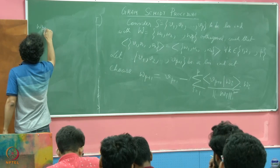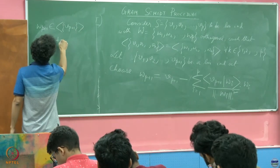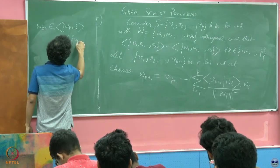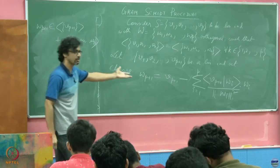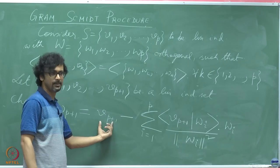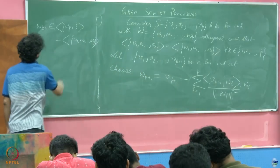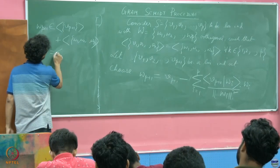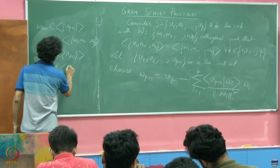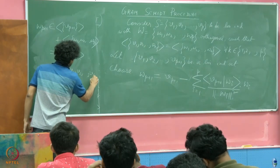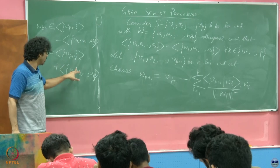So now look at this W P plus 1 again from this expression. Can I not say the W P plus 1 belongs to span of V P plus 1 plus span of W 1, W 2 till W P straightaway? There is one component along V P plus 1 and the rest of it is on the subspace span by W 1 through W P. But what is this? This is equal to the span of V P plus 1 plus by induction hypothesis, this is nothing but the span of V 1, V 2 till V P. What can you say about these two subspaces?